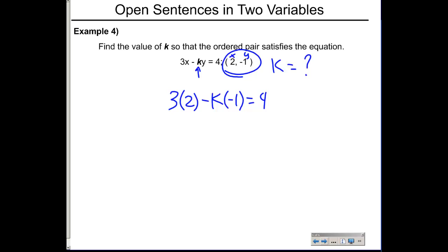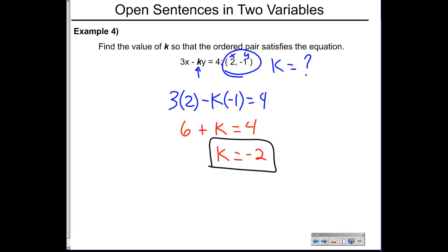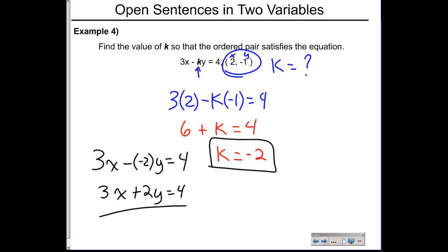Substituting: 3(2) − k(−1) = 4, which gives 6 + k = 4. Subtracting 6 from both sides: k = −2. So the original equation is 3x − (−2)y = 4, or equivalently 3x + 2y = 4. This is the equation for which (2, −1) is a solution, once k = −2 is determined.